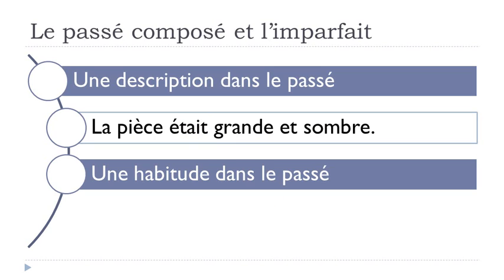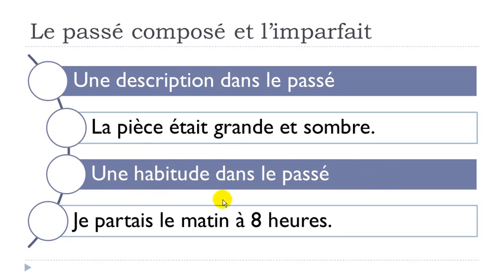The second use will be une habitude — a habit or something that you are used to doing — une habitude dans le passé. The example: je partais le matin à 8 heures. In that case, you want to insist on the fact that it's something you tend to do every morning.